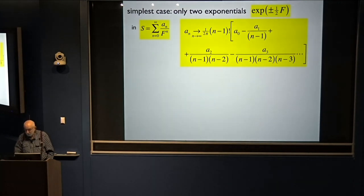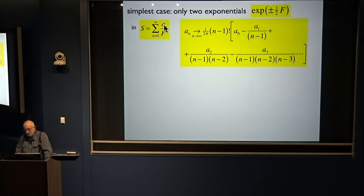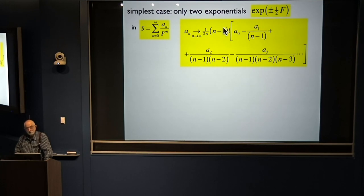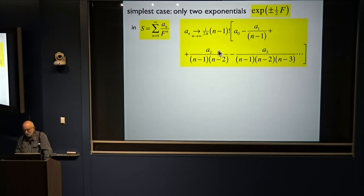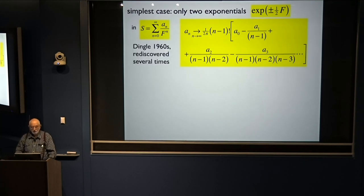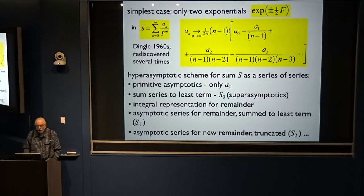Dingle had an explicit form: when there are only two exponentials, you have a series with coefficients. These are factorials, but that's only the first term. The factorial multiplies the lowest order, but then there are corrections to the high orders corresponding to the first, second, and third corrections. So it's a very deep thing, and as I say, Dingle discovered it — though it was rediscovered a number of times. Hyperasymptotics is this: you have this sum and you represent it as a series of series.